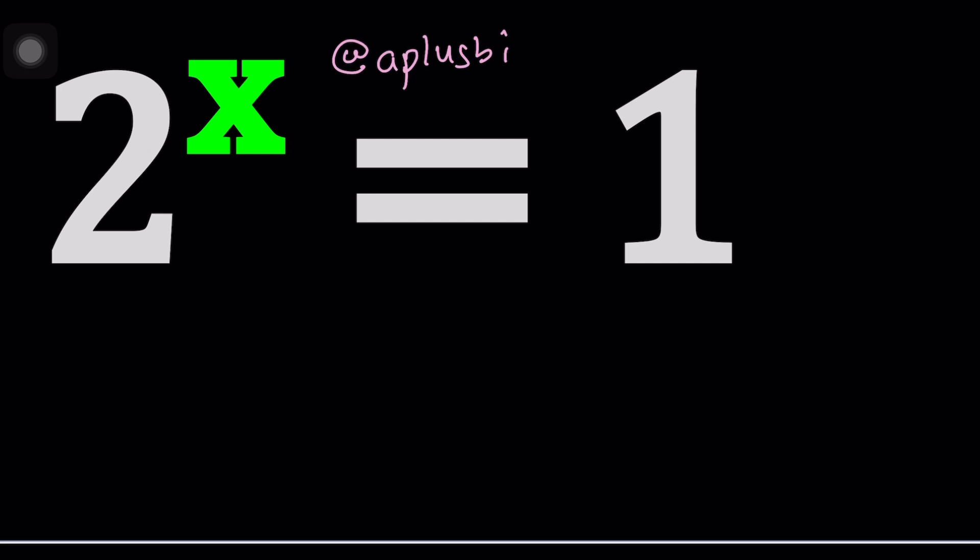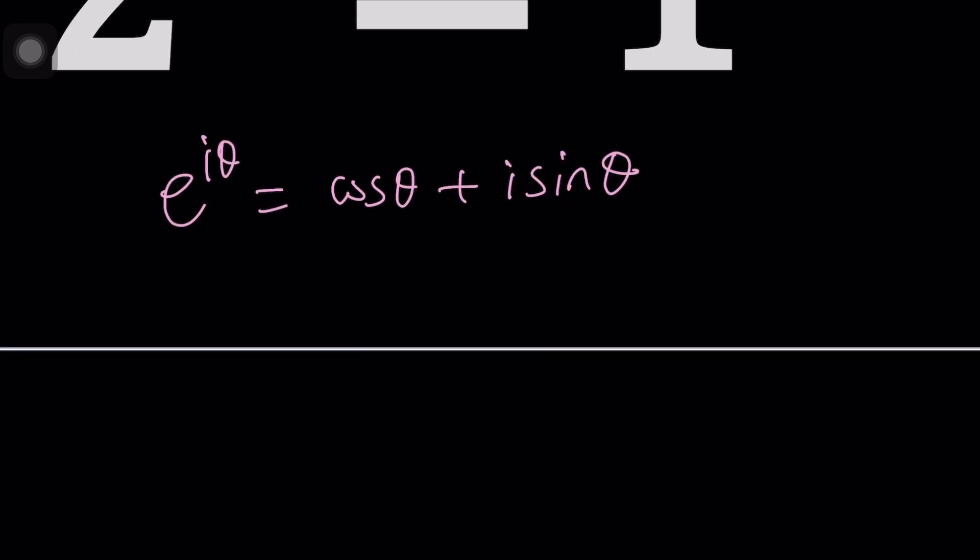First of all a couple things to know. Every complex number can be written as e to the power i theta which is equivalent to cosine theta plus i sine theta. And theta represents the angle. So on the argand plane, complex plane, we have this angle. We have the number z which you can write as e to the i theta. And of course you can also multiply it by r which is called the modulus.